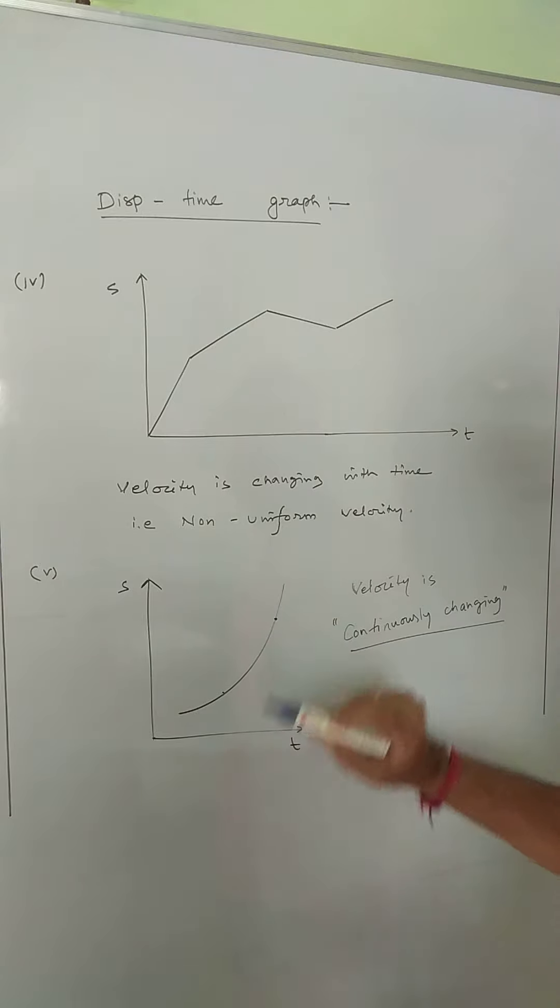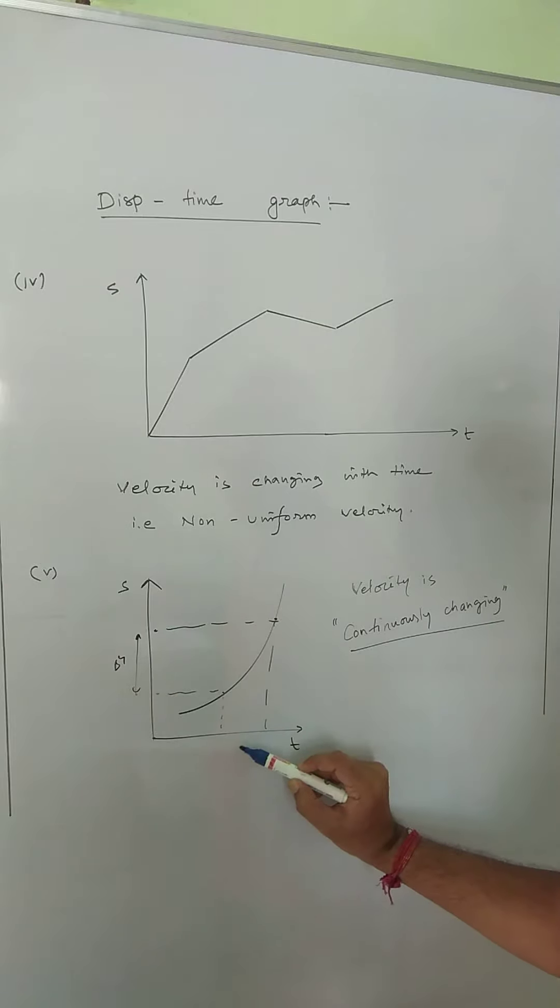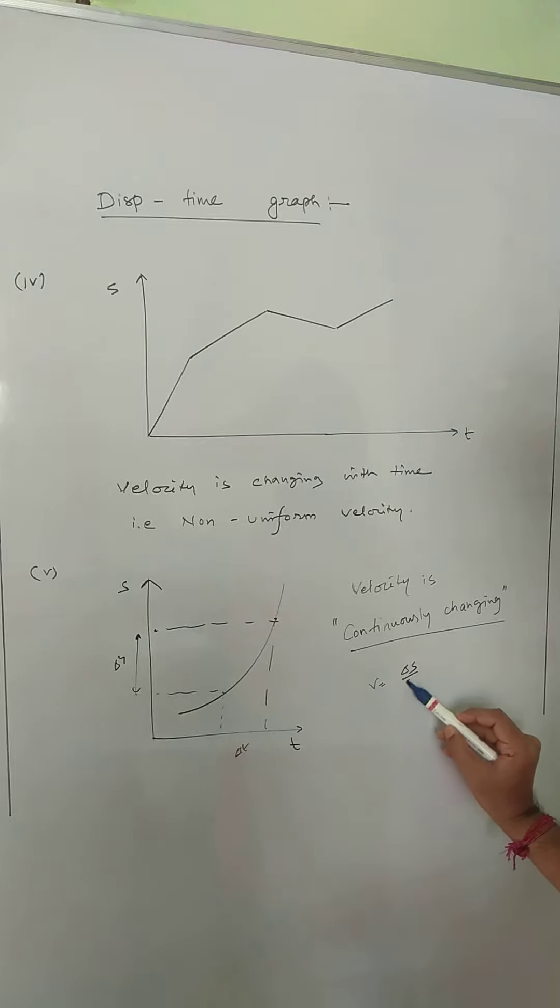We have to take any two points and draw two perpendiculars on the time axis and on the displacement axis. Then we have to find out this displacement delta x and this time delta t, and then we can find out the velocity delta s by delta t. That will be the average velocity in between these two points.